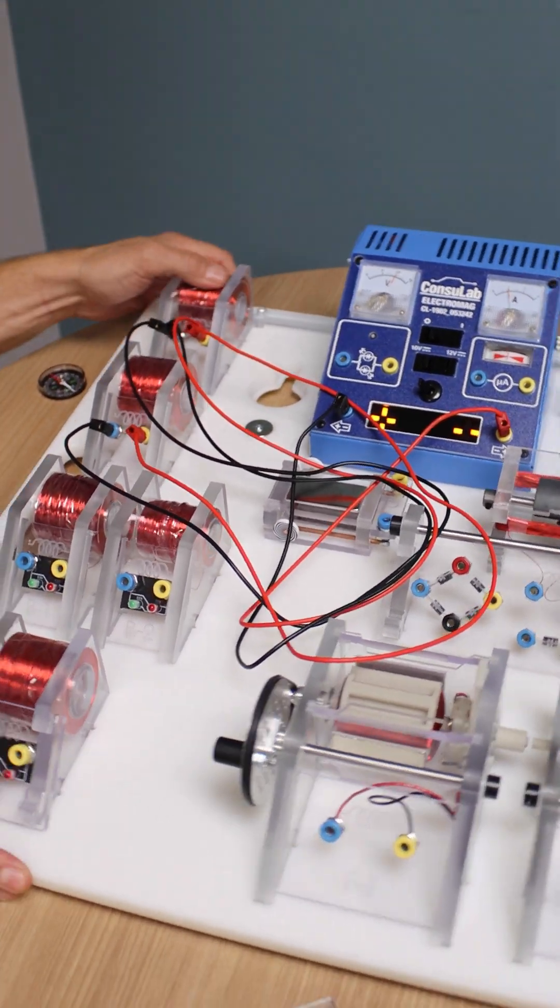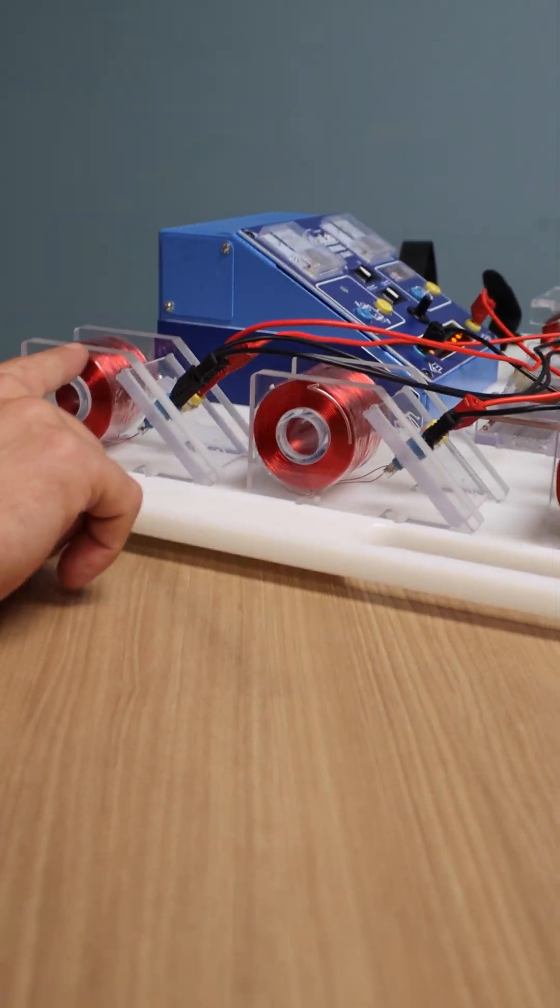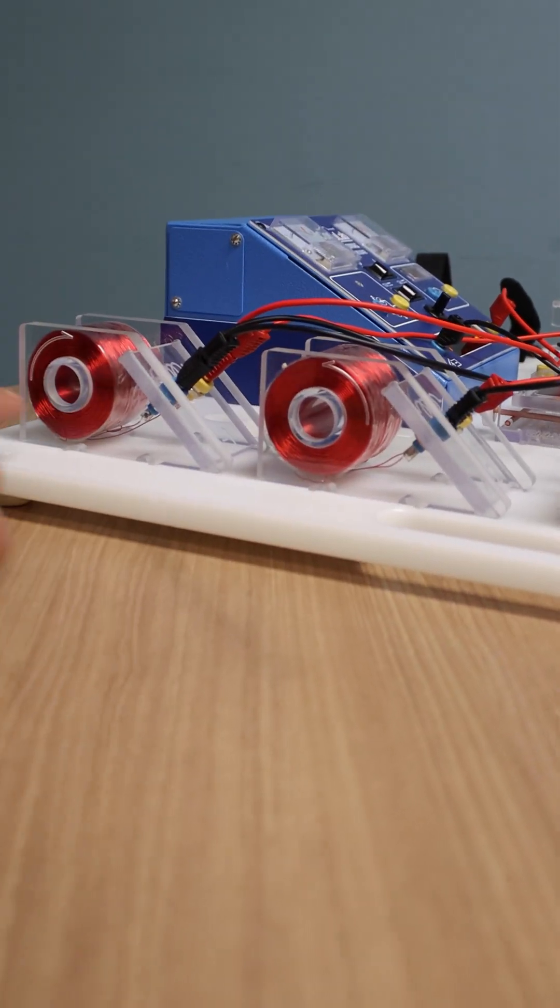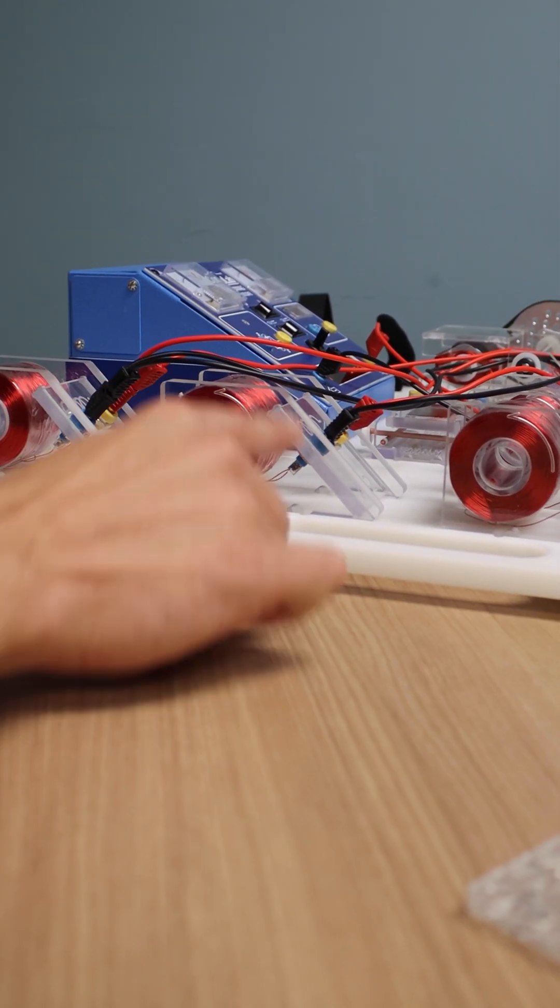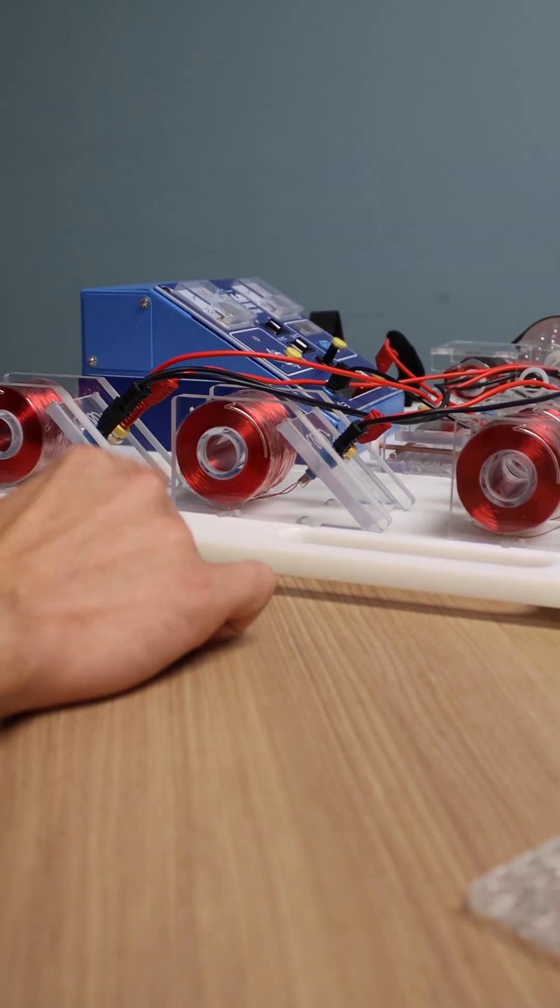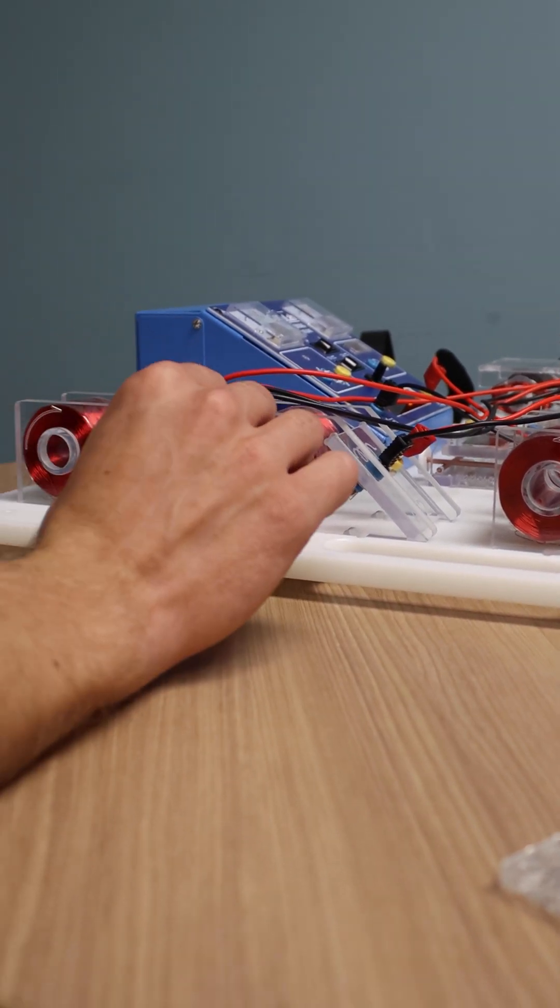The only difference between the two is the direction they're wrapped. This coil is wrapped in this clockwise direction. This coil is wrapped in this direction counterclockwise and that affects the magnetic polarity. It's really, really cool.